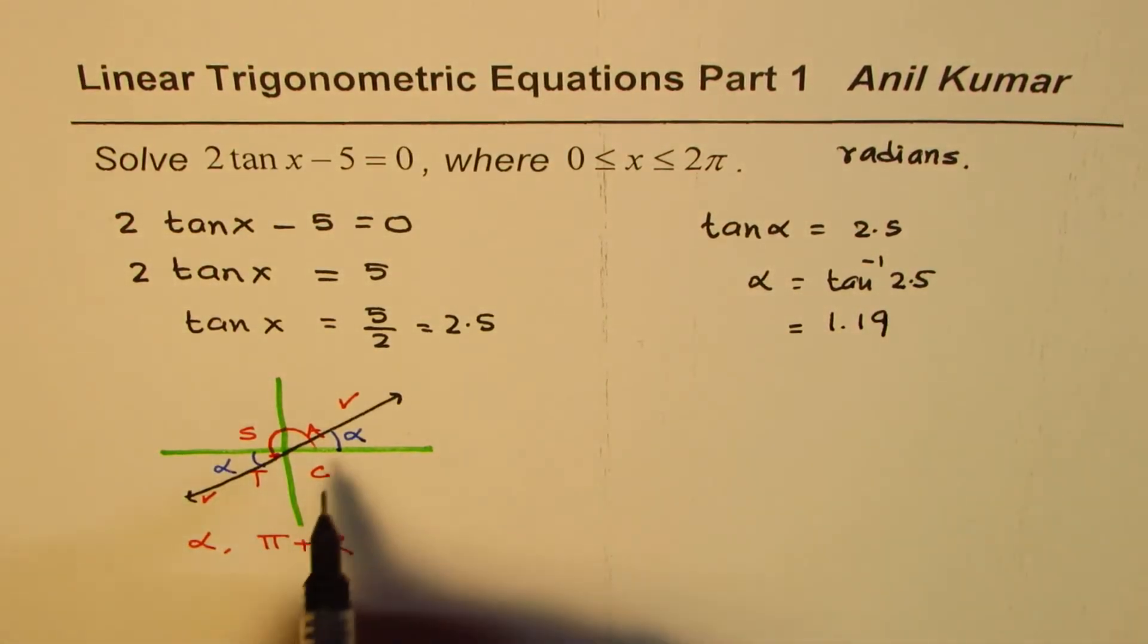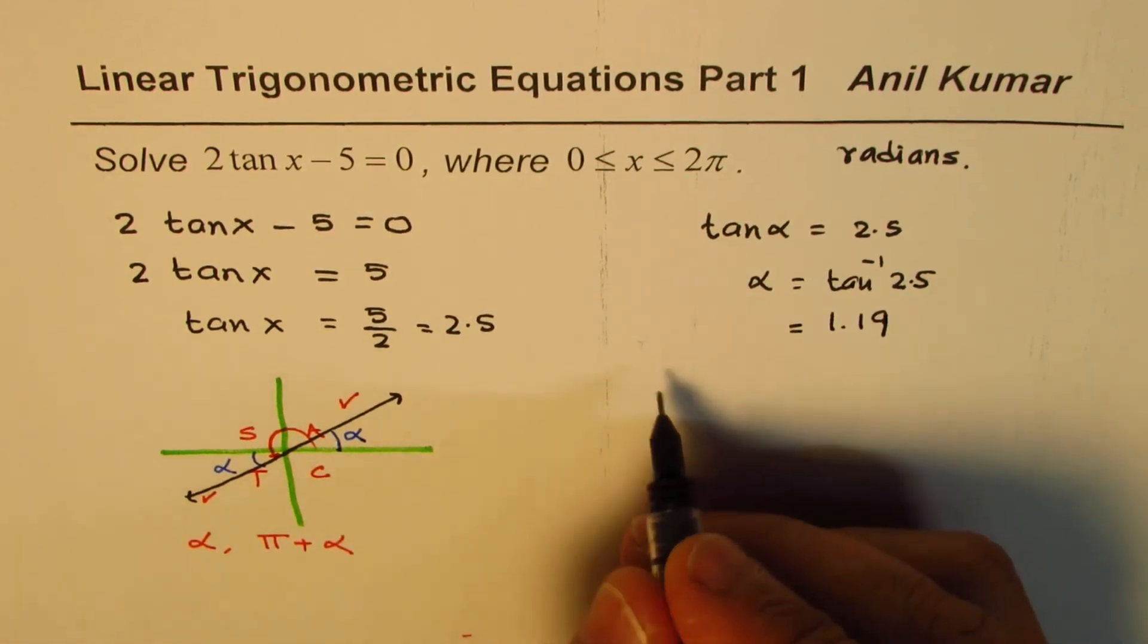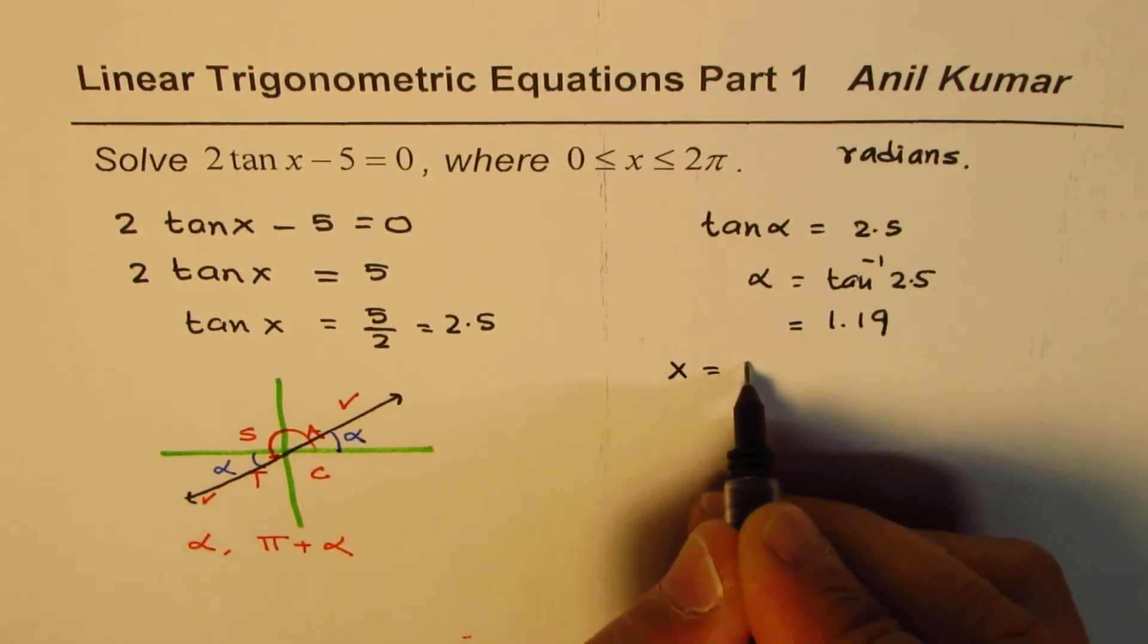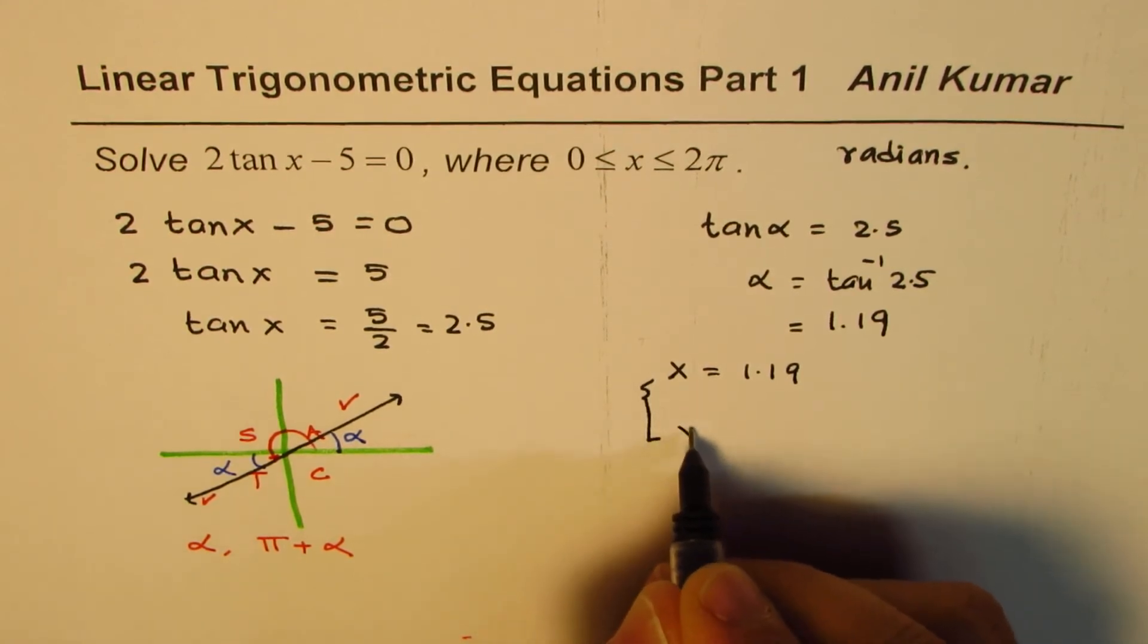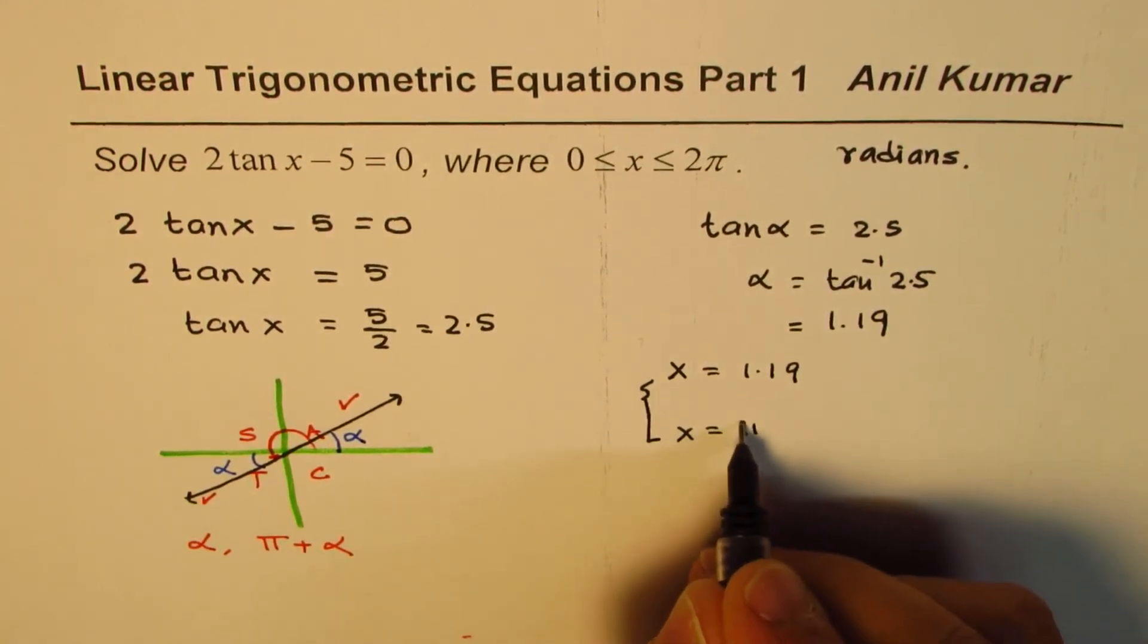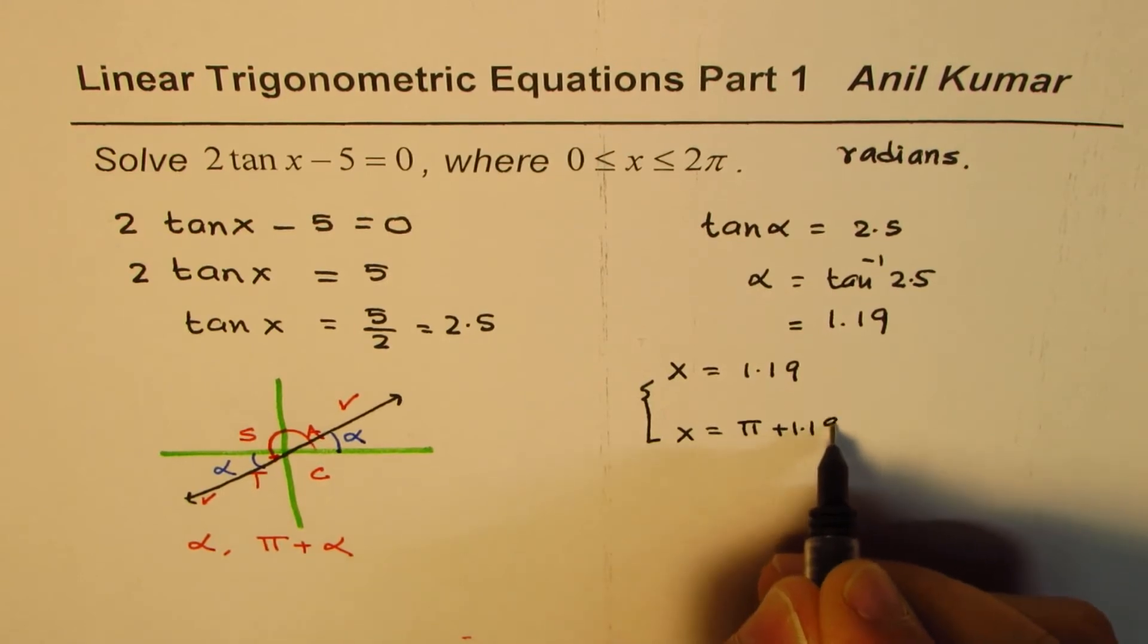So one of the solutions we see is alpha itself. So we can say x equals 1.19. The other value, so there are two solutions. The other value is pi plus alpha, so the other value is pi plus 1.19.